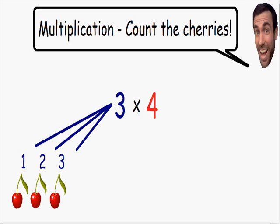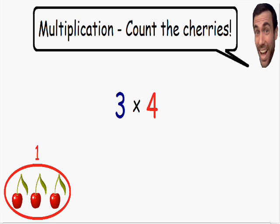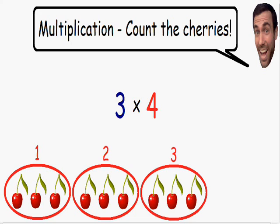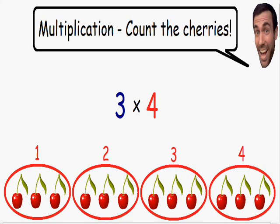So let's multiply these cherries by 4. At the moment we have one set of cherries. Now we have two sets of cherries. Now we have 3 sets. Now we have 4 sets of cherries. We have multiplied them by 4.